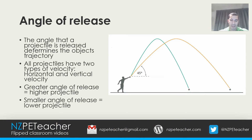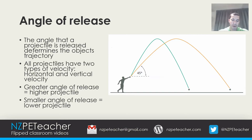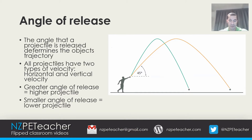As an example, for shot putters, the optimum angle of release lies somewhere between 41 and 43 degrees. However, a biomechanical study at the University of Kansas found that shot putters release their shots at an angle between 32 and 38 degrees, with a few cases reported above 40 degrees.